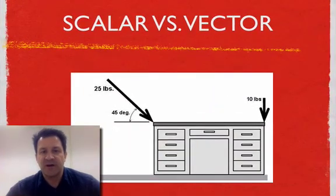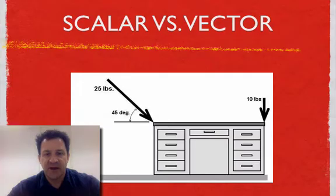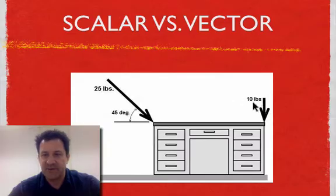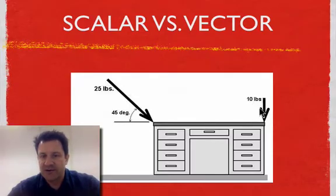This video is entitled Scalar vs Vector, and I'm going to go over the differences between what a scalar is and a vector is. In this diagram on the front, I have a desk with two arrows pointing down the desk and numbers next to them. The numbers represent the forces and the arrows represent the direction. So in this case, these are vectors — force is a vector because we have a number and an arrow.